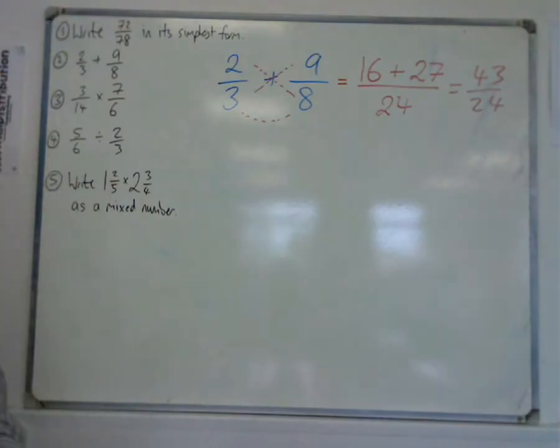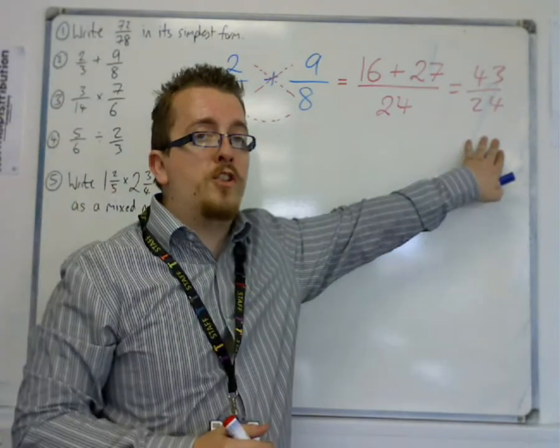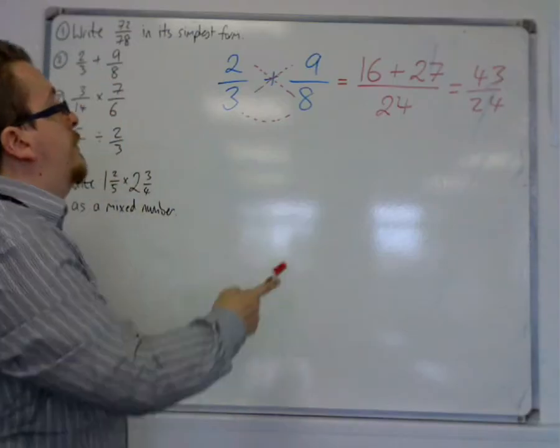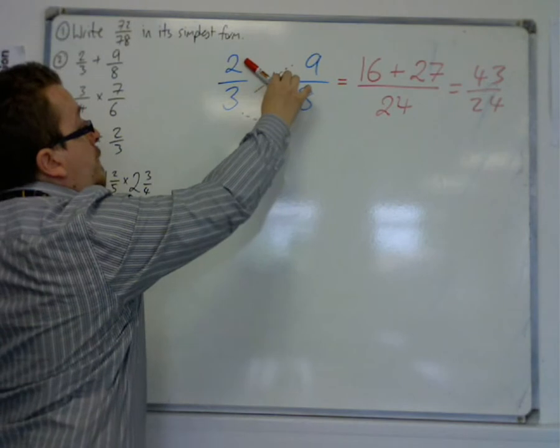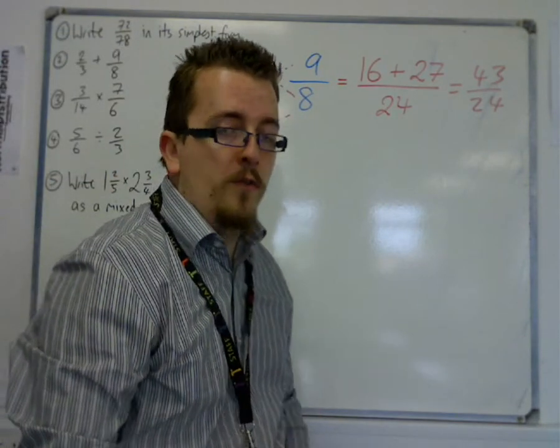So that is adding the two fractions together, 43 over 24, using this cross multiplication. The thing to remember is that you start with the top left and bottom right. But from then on, it's a pretty straightforward process.